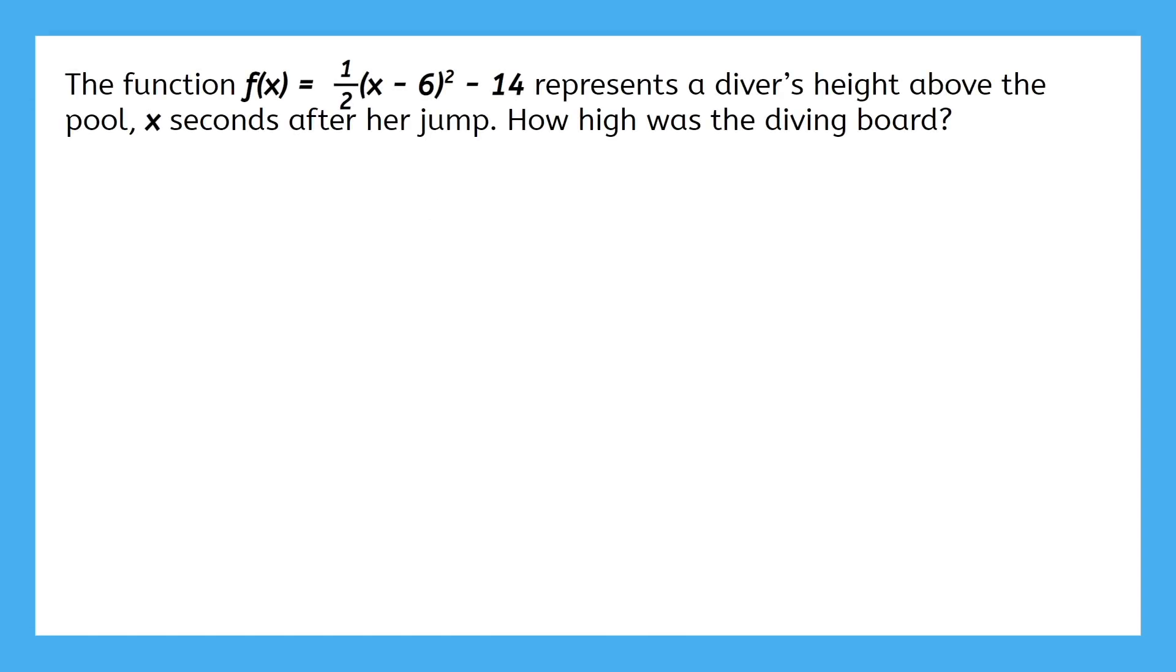The last thing we might be asked for is the initial value, like in this problem. The function f(x) = 1/2(x - 6)² - 14 represents a diver's height above the pool x seconds after her jump. How high was the diving board?